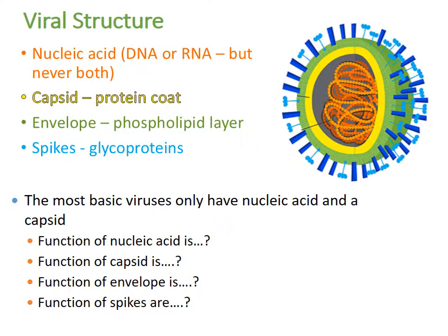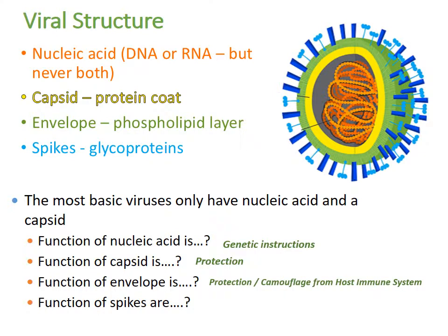The nucleic acid functions as the genetic instructions. The capsid helps protect the nucleic acid. The envelope helps to protect the viral particle and also camouflages it from the host immune system. The spikes are important for attachment and entry into the host cell.